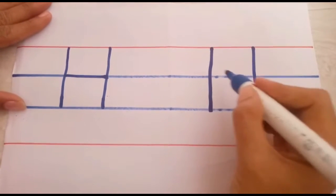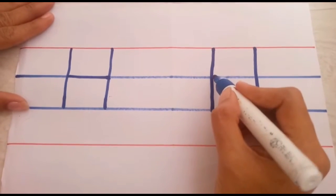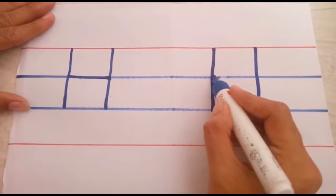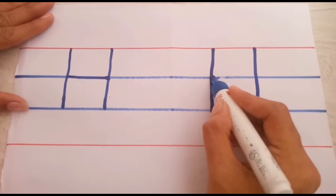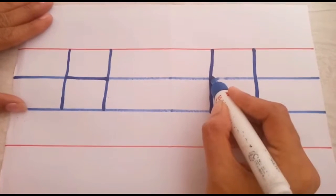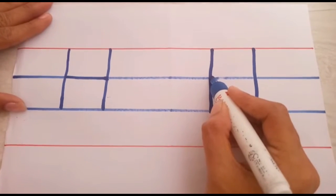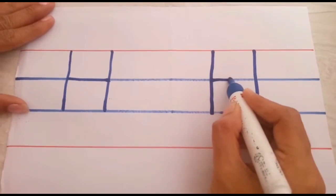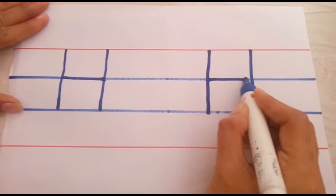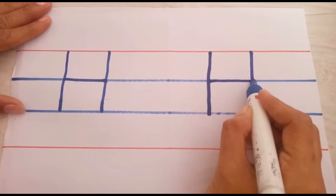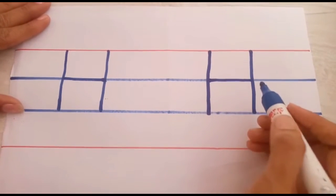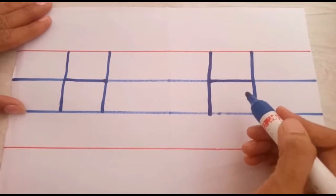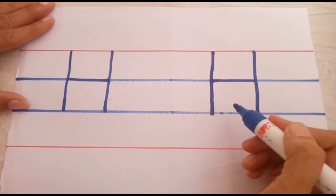Shall we go to second blue line? Second blue line. We will put one sleeping line, children. Which letter is it? H!